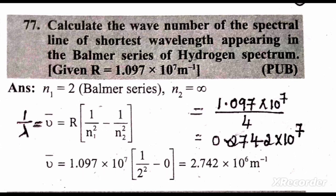So 1.097 times 10 to the power of 7, this is 2 to the power of 2 nothing but 4. When we divide, we will get 0.2742 times 10 to the power of 7. When we shift the decimal